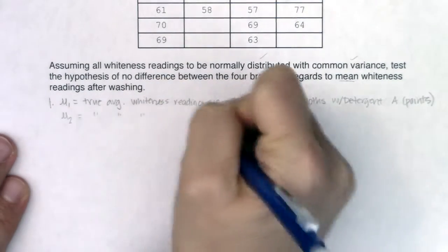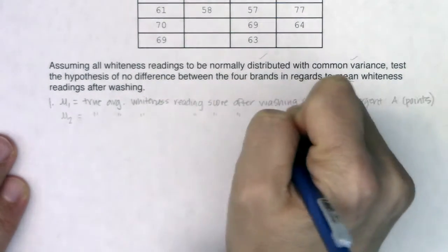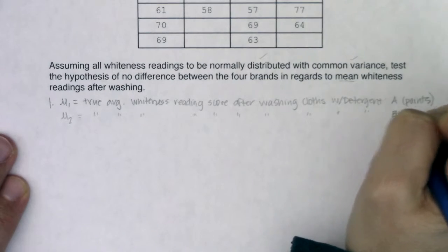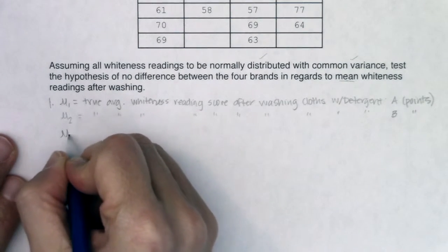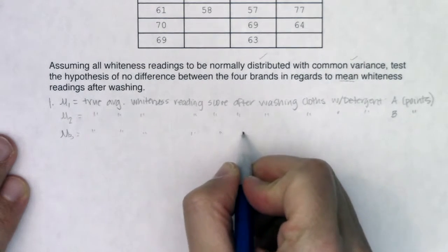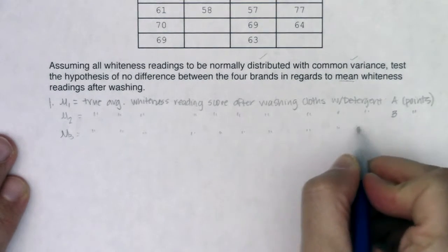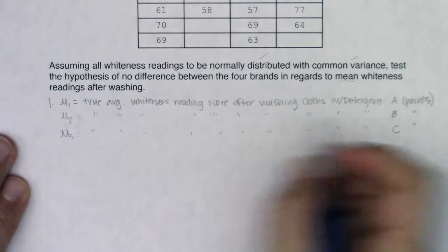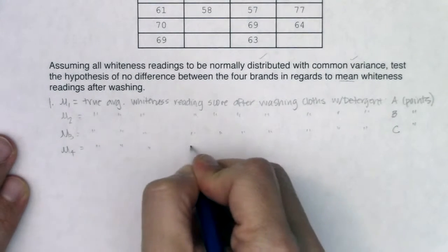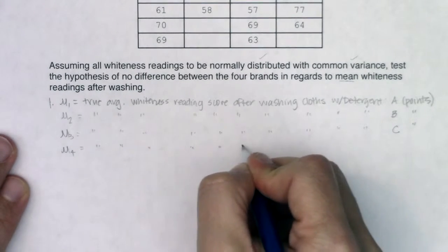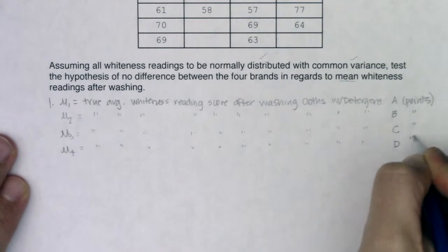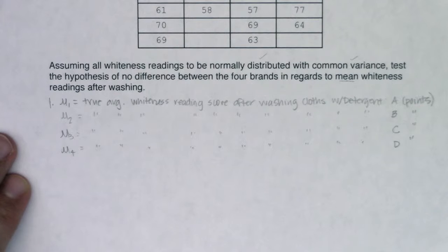I have four means to define. Mu sub 2 will be the true average whiteness reading for cloths washed with detergent B. Mu sub 3 will be the true average whiteness reading for cloths washed with detergent C, and mu sub 4 will be for detergent D.